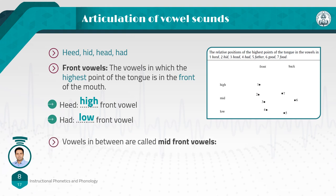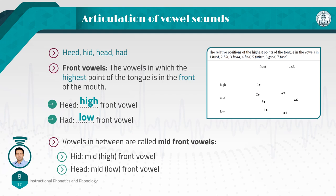Vowels in between — number two and three — are called mid-front vowels. For 'hit,' we can say it is a mid-high front vowel. If you pay attention, number two is higher than number three. Both are mid, so 'I' in 'hit' is a mid-high front vowel, but number three, 'head,' is a mid-low front vowel, because both are in the middle but number two is higher.